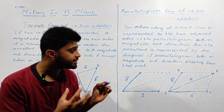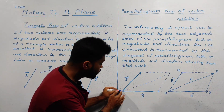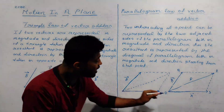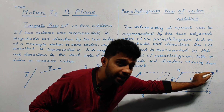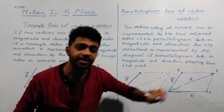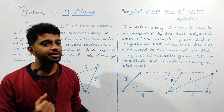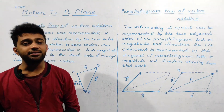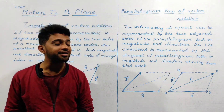Starting from the same point — the common point of two vectors — the two vectors join at that point. The tail starts at the common point and the diagonal represents the resultant. The resultant of two vectors can be represented as two adjacent sides of a parallelogram. This is the Parallelogram Law of Vector Addition.